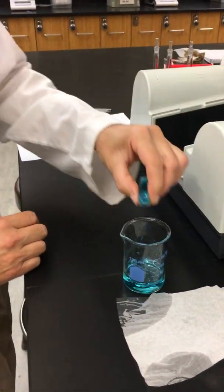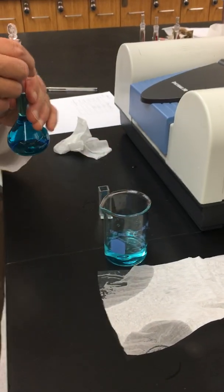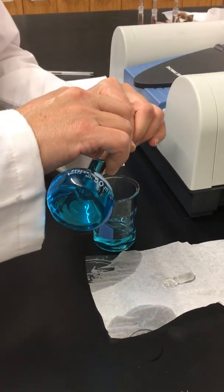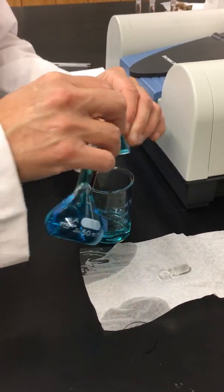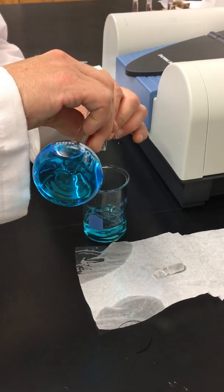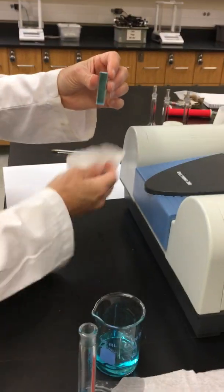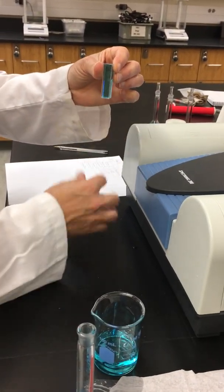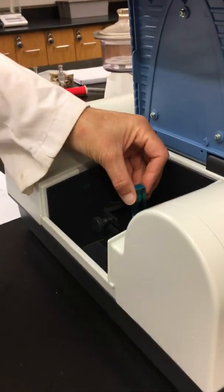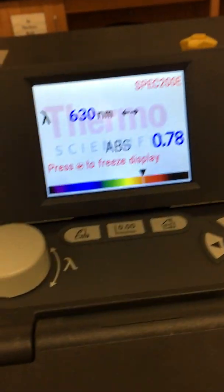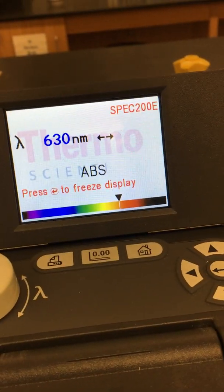We'll pour out solution number three. Now we're ready to do our solution number four, the same procedure. We'll rinse our cuvette with our solution, wipe it down with our Kimwipe, place it in our spectrometer. Now we'll get the absorbance of our solution number four, which is 0.78.